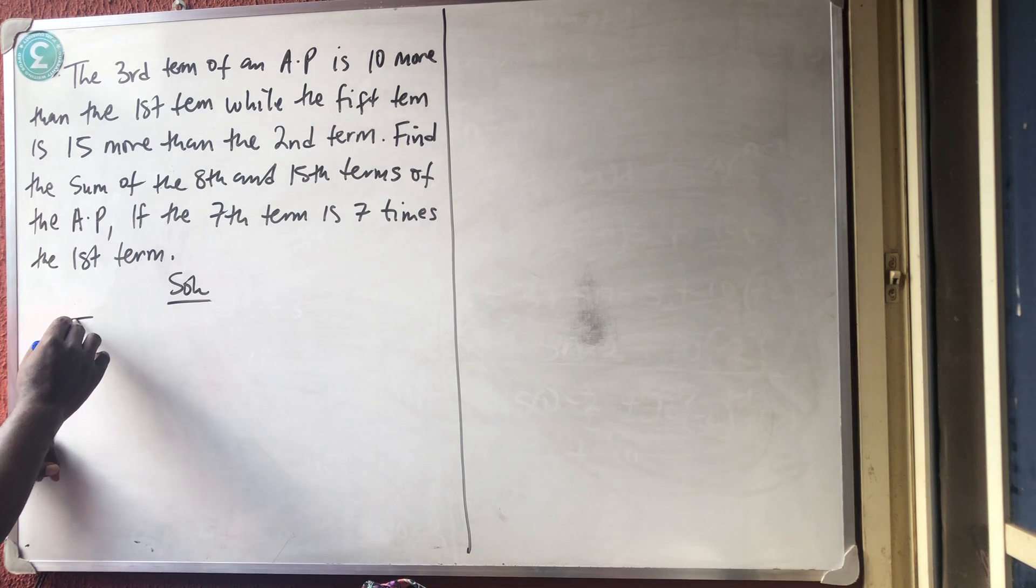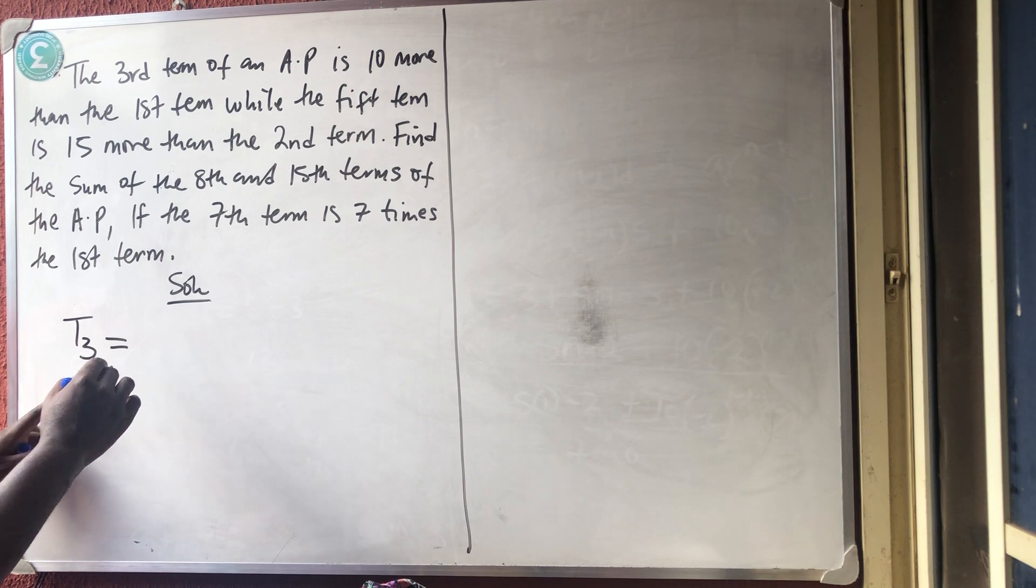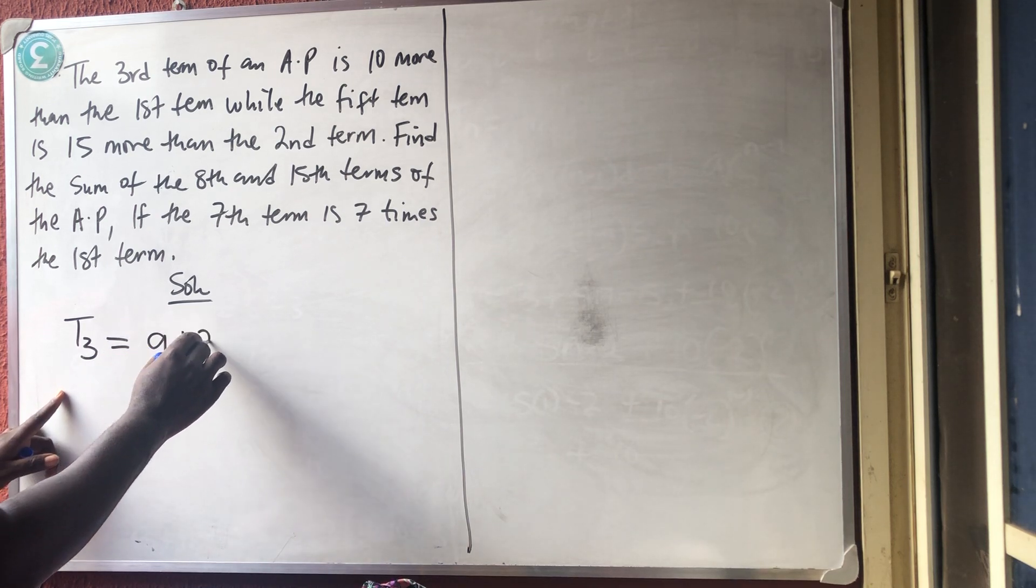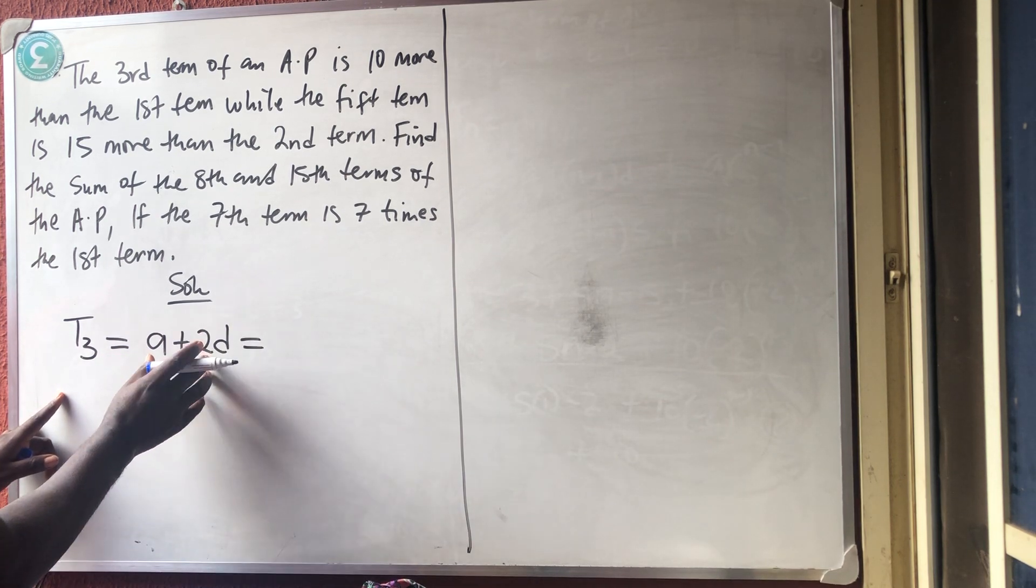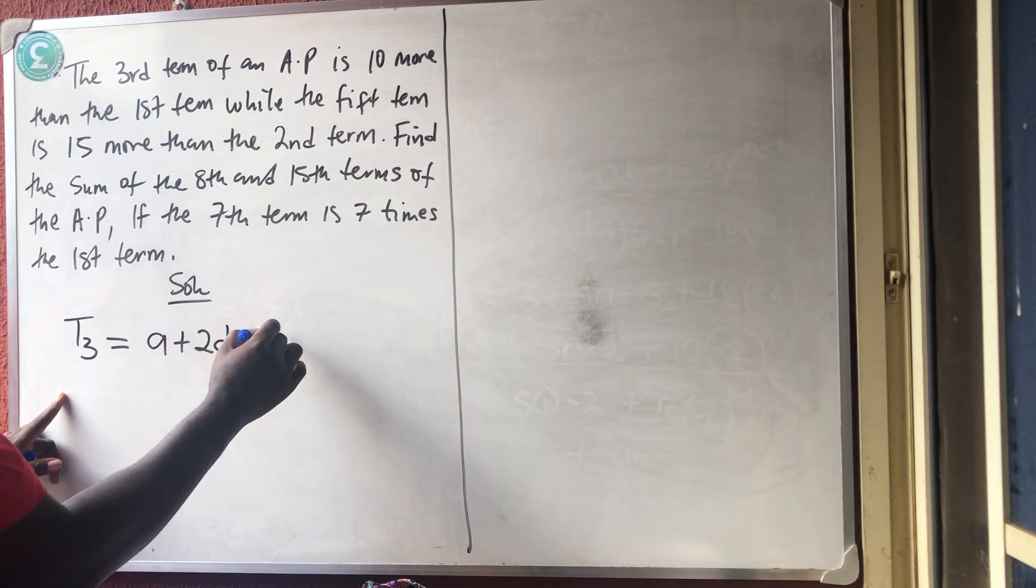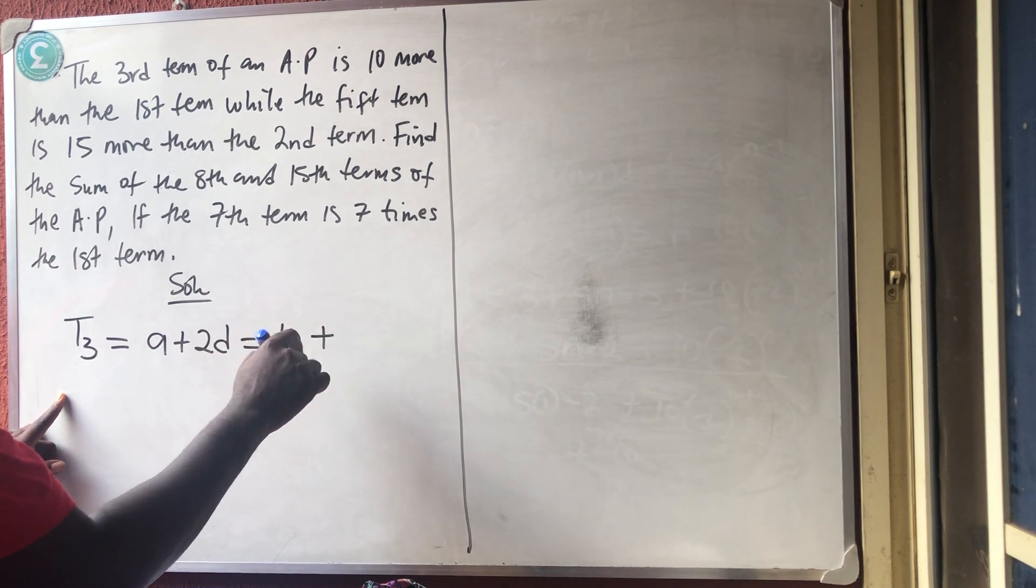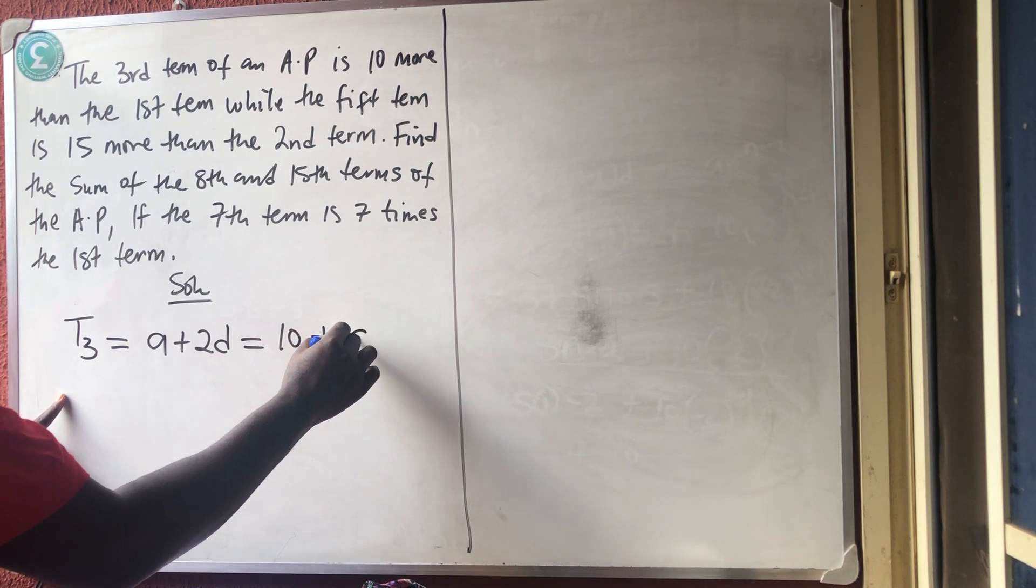They said that the first term of an AP, sorry, the third term of an AP, and the formula for third term of an AP is A plus 2D. And they said that this third term, which is this formula, is 10 more than, more than is to add plus, more than the first term, A.